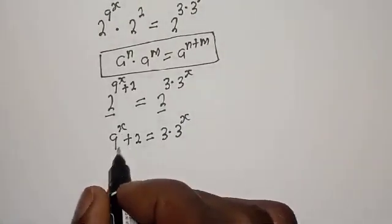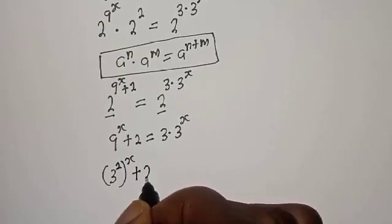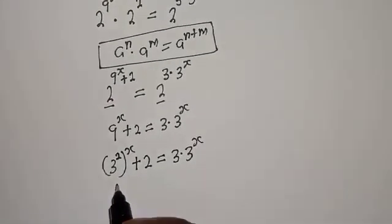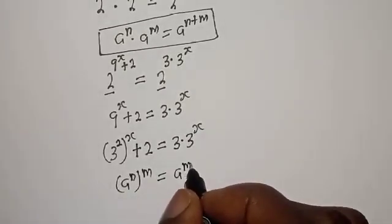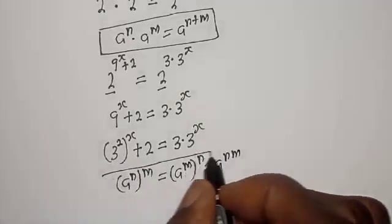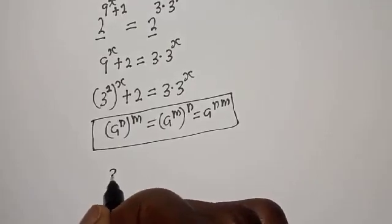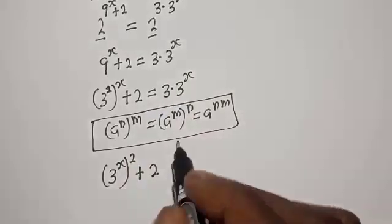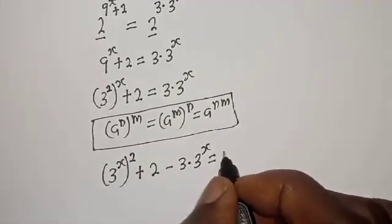Then 9 raised to power s can be written as 3 squared raised to power s, plus 2, is equal to 3 multiplied by 3 raised to power s. Take note that if you have a raised to power n, to the power of m, this equals a raised to power n times m. So 3 raised to power 2s, plus 2, minus 3 multiplied by 3 raised to power s, is equal to 0.